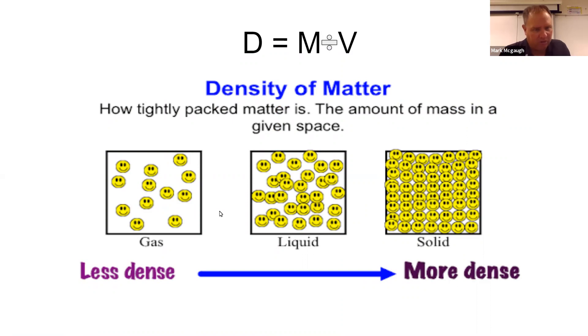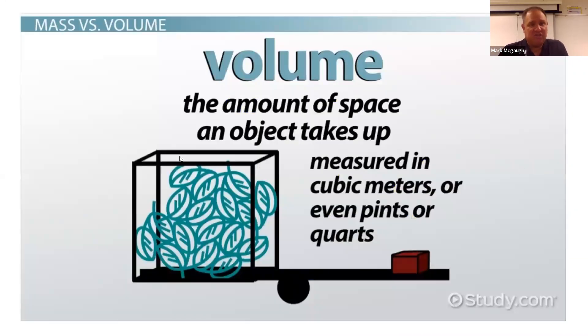Density: all you need to know is density refers to how tightly packed together the particles are. This is low density, medium density, high density. The more tightly packed together things are, the more dense they are. Volume is just the amount of space something takes up.